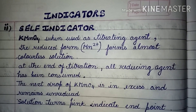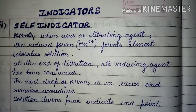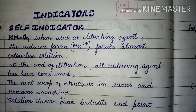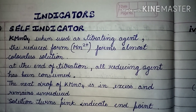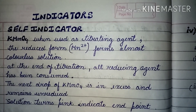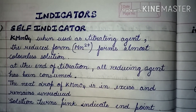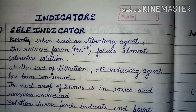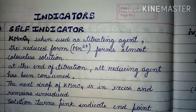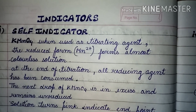Hello everyone, welcome to Chemotropic Learning. In the last video I discussed about redox titration — that was the introduction part — and at the end I discussed one type of indicator used in redox titration: the internal oxidation-reduction indicator, with an example of dimethylamine.